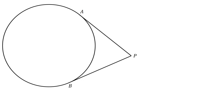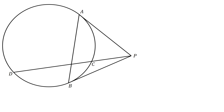Hi, welcome to my channel. In this video, we want to solve the following problem. PA and PB are tangents to the circle and PCD is a secant segment. Connect A to B and label the intersection of AB and PD as E. Given that DE over CE equals 3 and CP equals 5 units, our goal is to find the length of DP.